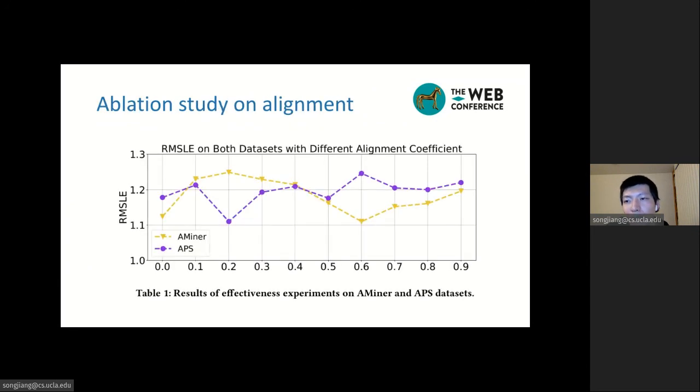We also study the effect of the temporal alignment regularizer. The RMSE shows a similar pattern on both datasets. It first becomes better, and then worse with a larger alignment. But with an appropriate strength, the model can achieve optimal results on both datasets. That indicates the importance of our alignment.